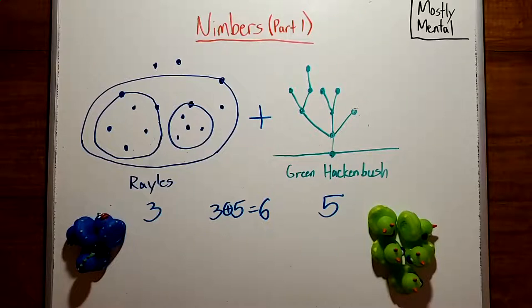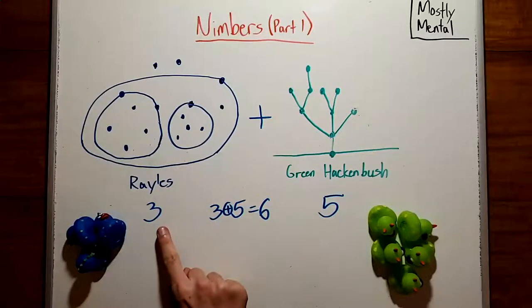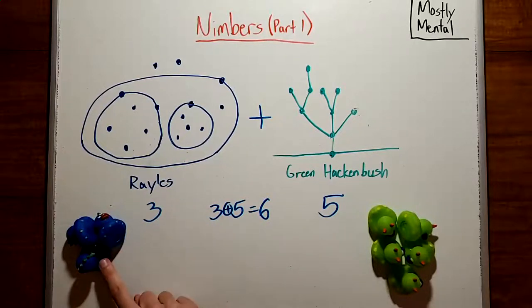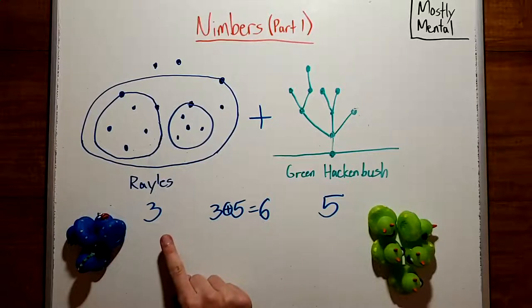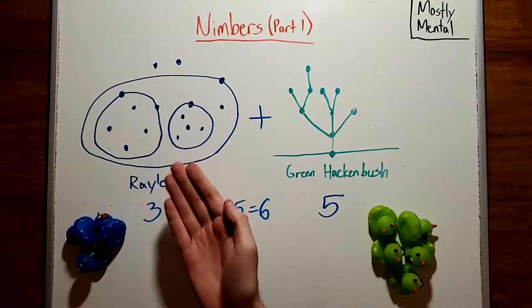Which is why, as we saw last time, the winning strategy is to make that sum zero. So any position in an impartial game has a Sprague-Grundy value, and a nim sum of that size will have the same value. And if we add them together, the total is zero, which makes it a P position. That is, there's always a nim sum pile which can balance with a given position.